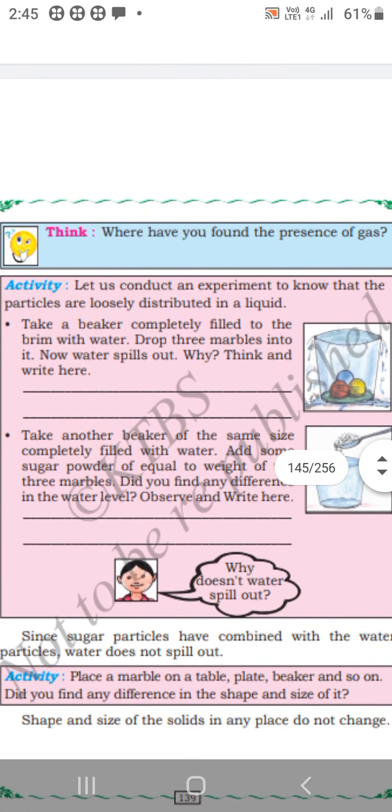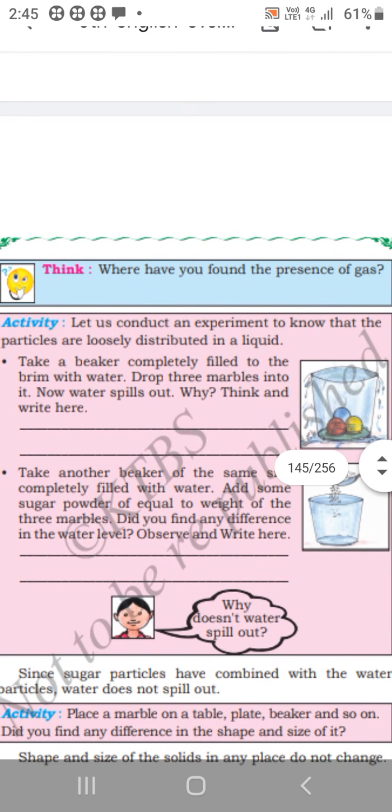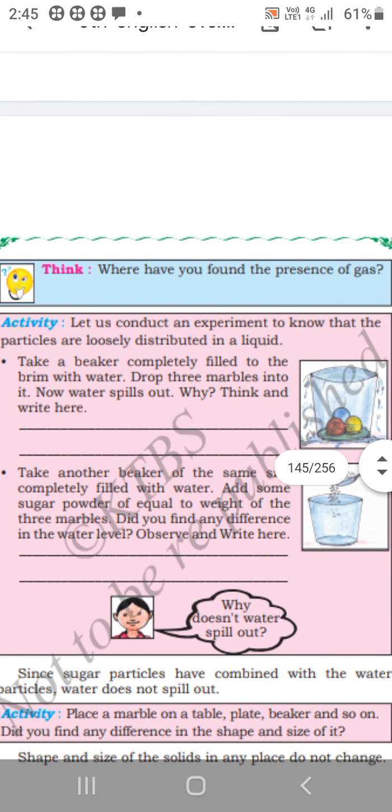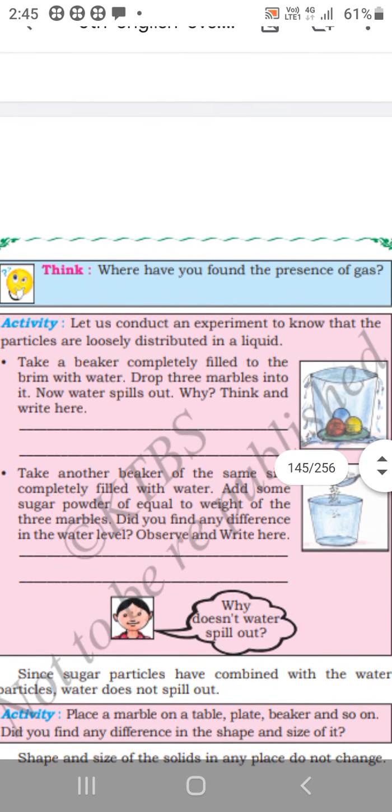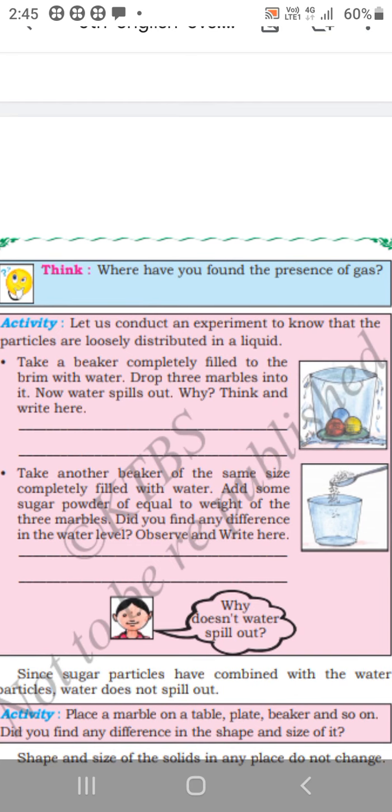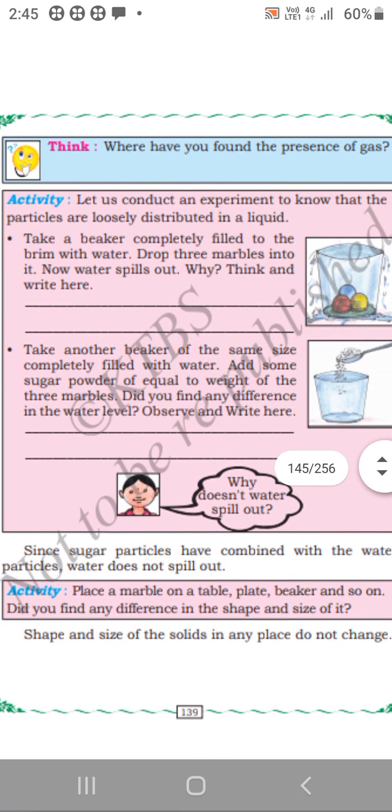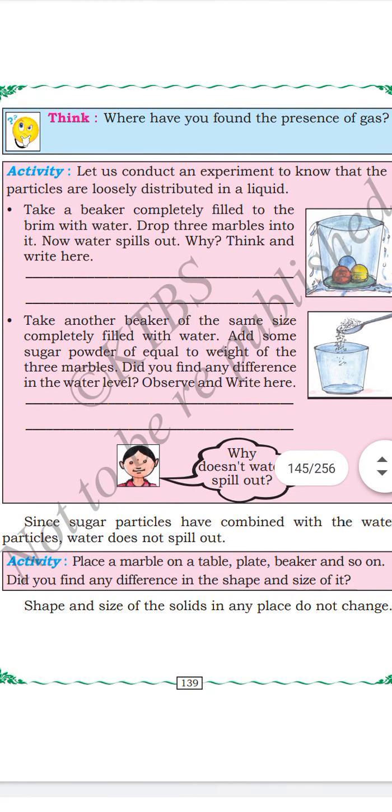Take another beaker of the same size completely filled with water. Add some sugar powder equal to the weight of three marbles. Find any difference in the water level. No, because the particles of salt got mixed with the water. Since sugar particles are combined with the water particles, the water does not spill out.